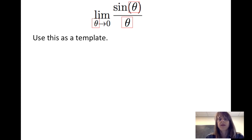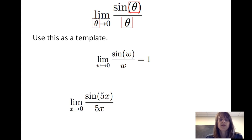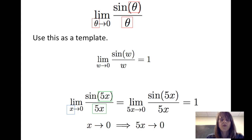I can replace that theta with anything and the limit is still 1. So the limit of sine of w over w as w goes to 0 has to be 1. As another example, consider the sine of 5x divided by 5x as x goes to 0. As x goes to 0, it makes sense that 5x also goes to 0. So the limit of sine of 5x divided by 5x as 5x goes to 0 matches the template and is equal to 1.